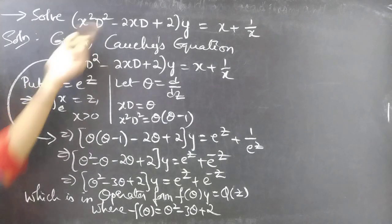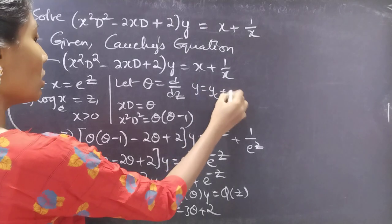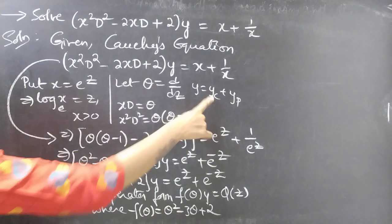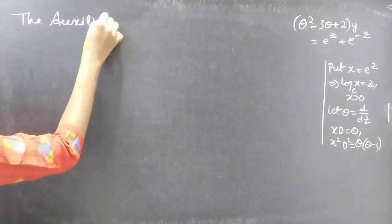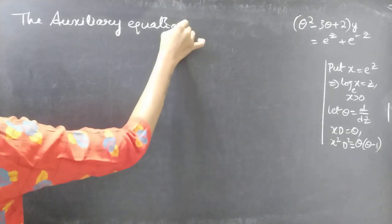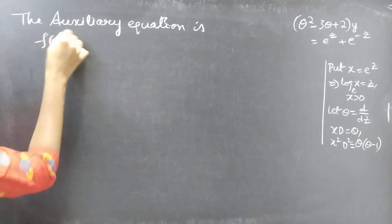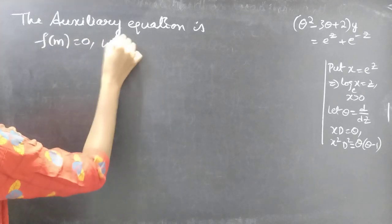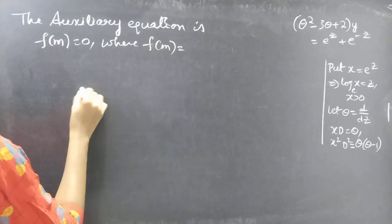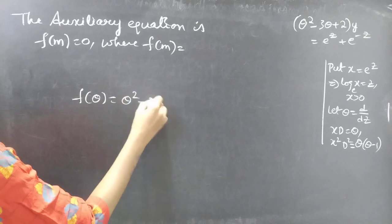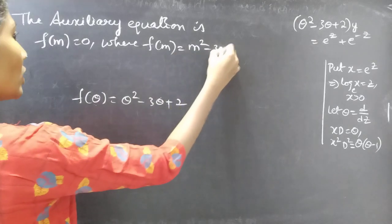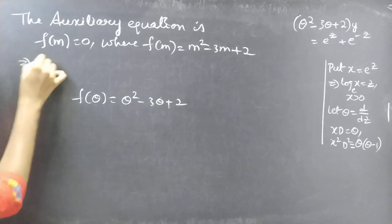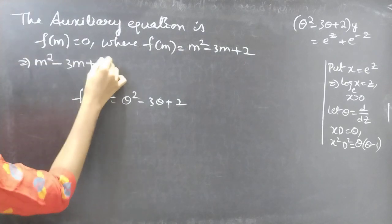Now we need to find the general solution, given by y equals yc plus yp. First we will find yc using the auxiliary equation. The auxiliary equation is f(m) equals 0, where f(theta) is theta squared minus 3 theta plus 2. Replacing the differential operator by m, we get f(m) equals m squared minus 3m plus 2, so the auxiliary equation is m squared minus 3m plus 2 equals 0.